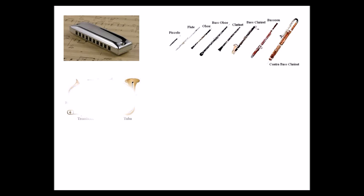Then we have the brass family, which includes your French horn, flugelhorn, trumpet, trombone, and tuba. Let us hear what they sound like.